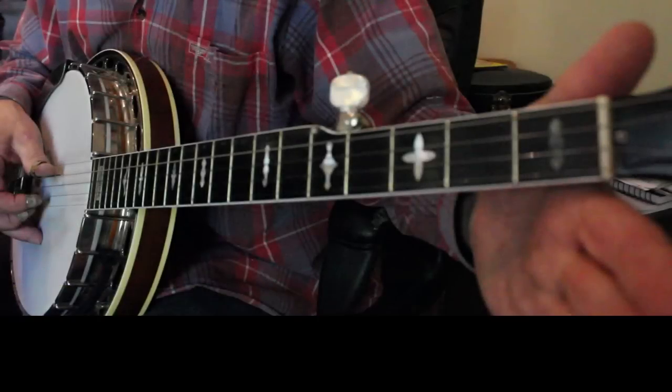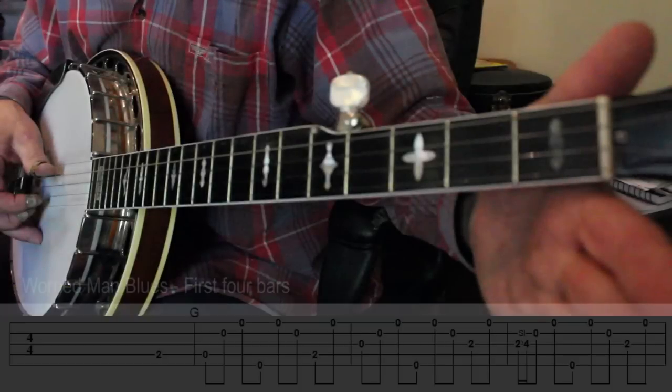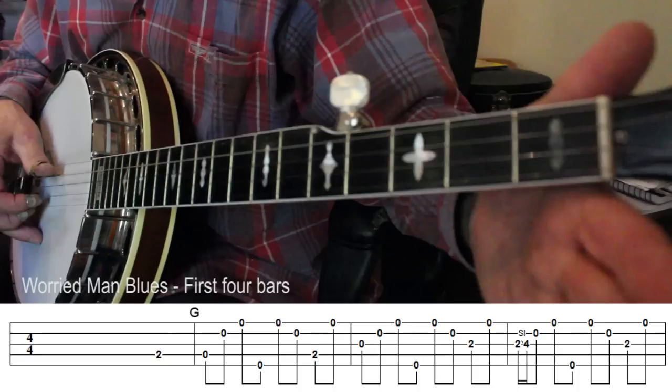The tune we're going to study is the old Woody Guthrie song, Worried Man Blues. This arrangement of the song is done entirely with variations of the forward-backward roll. We'll learn the song completely in the next video.